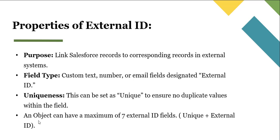One more limitation: an object can have a maximum of seven external ID fields combined between unique and external ID fields. For example, if a particular object already has four unique fields, you can only create three external ID fields on that object. Conversely, if you have five external IDs, you can only make two unique fields on that object.